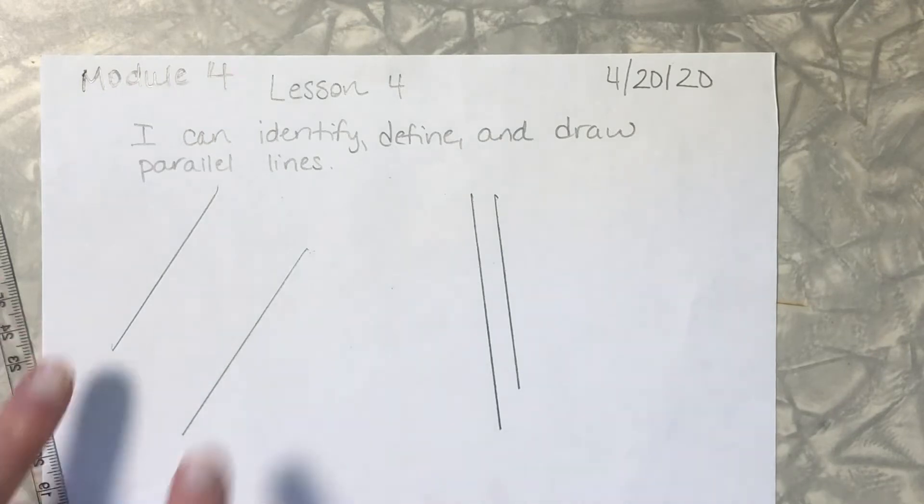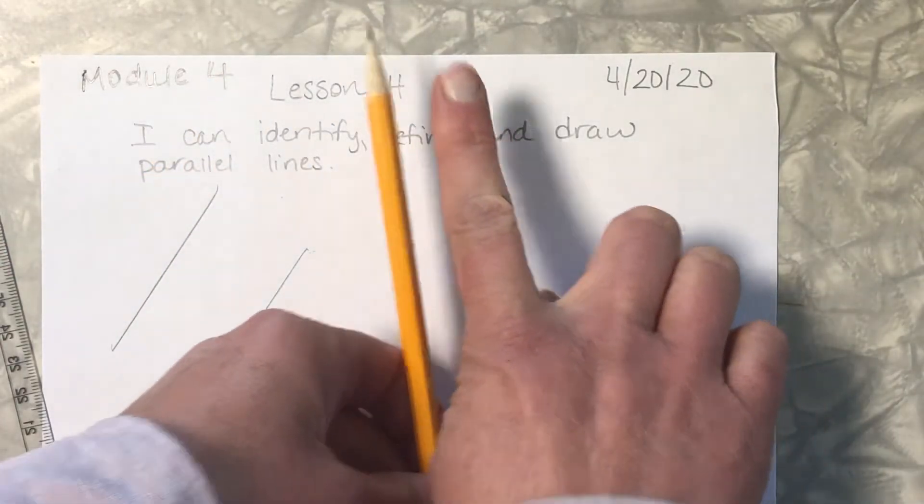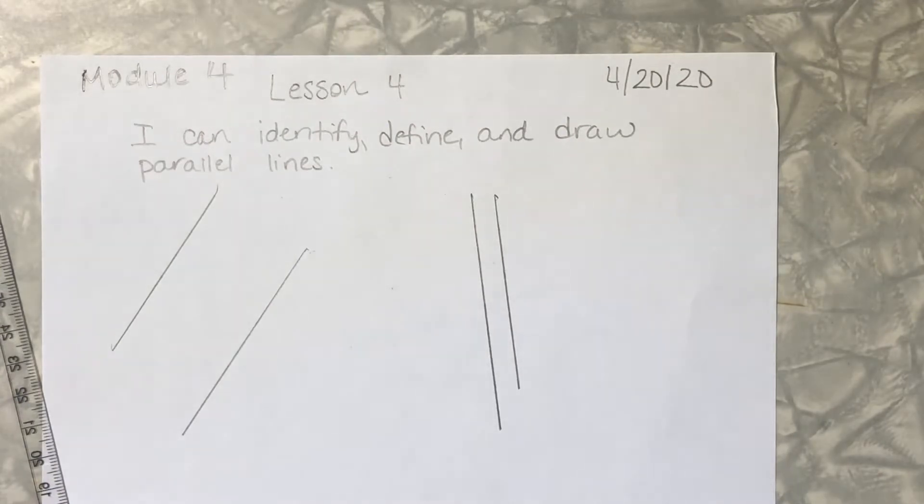Take a look at these two lines and I want you to imagine. If these lines kept on going what would be true about them? If you said they never intersect you are exactly right.